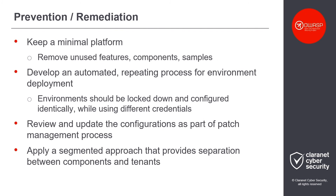As you've seen, there is no one-size-fits-all fix for security misconfigurations, but there are a number of general pieces of advice and precautions that can help you avoid them. Most importantly, keeping a minimal platform should remain the focus — removing unused features, components, and samples not only reduces the attack surface, but also makes it easier to manage such systems. New environments should be deployed using an automated, repeating process; having identically configured and locked-down environments makes it less likely that you'll make a mistake when deploying them. Just don't forget to avoid password reuse and set up your systems with unique credentials. You should obviously review and update all your configurations as part of a patch management policy. Finally, applying a segmented approach helps with separation between components and tenants, reducing the chance of a security misconfiguration being useful to an attacker.